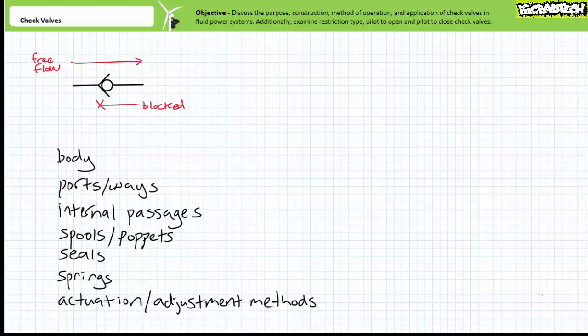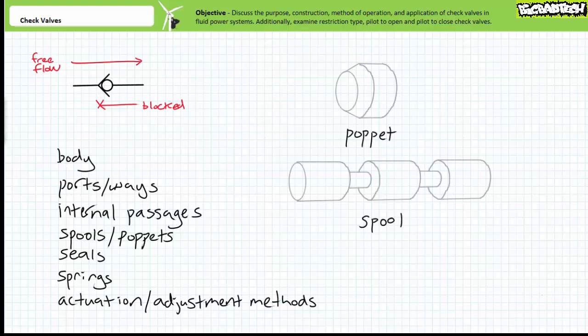Some valves have movable parts like spools or poppets that selectively stop, start, or change direction of fluid flow or modify flow rate or pressure. A poppet, for lack of a better descriptive term, are kind of like plugs.